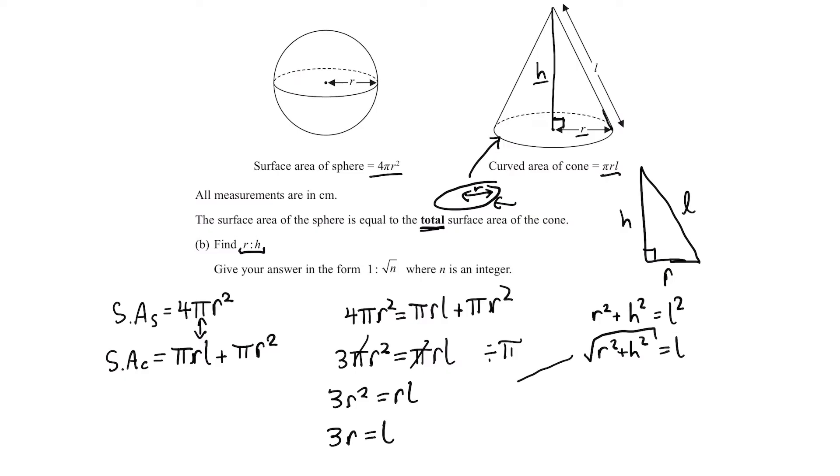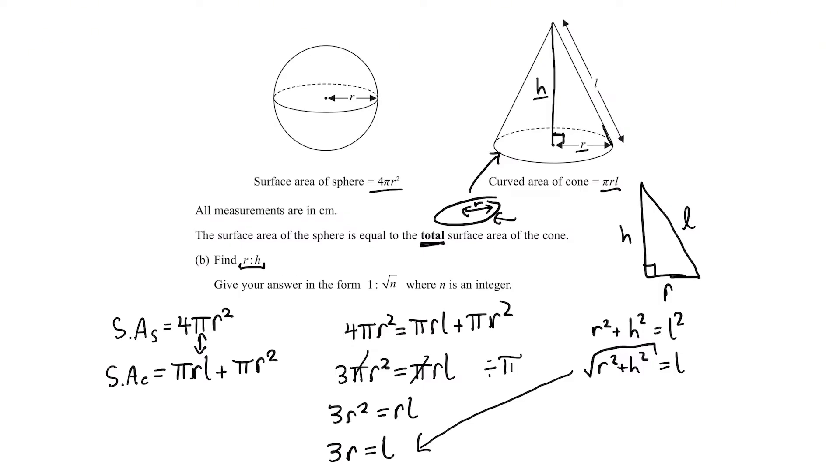So we put this in for L here. We have 3R equals square root of R squared plus H squared. Square both sides, we get 9 - remember to square the 3 as well - 9R squared equals R squared plus H squared. Take away R squared from both sides, we have 8R squared equals H squared. Take square root of both sides, square root 8 multiplied by R equals H. So the ratio is just R to H equals 1 to root 8. That's our final answer.